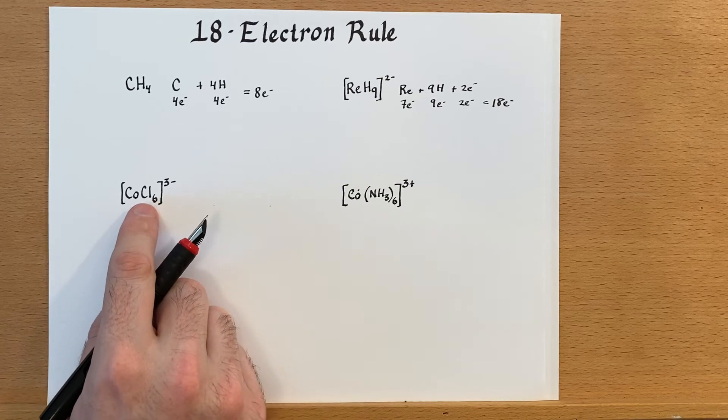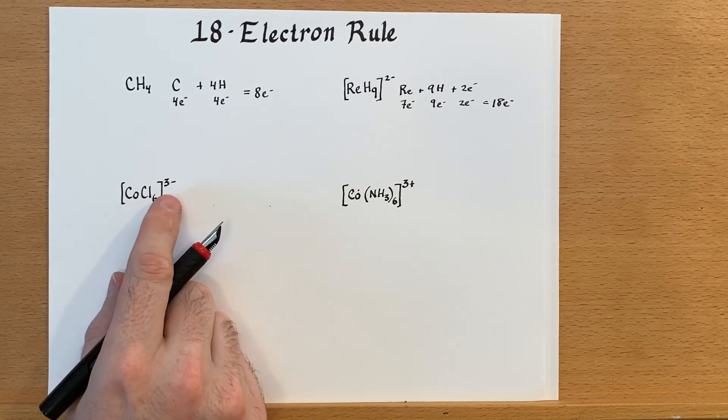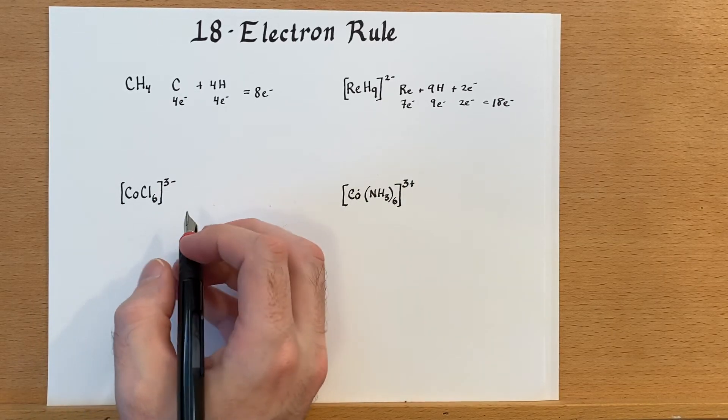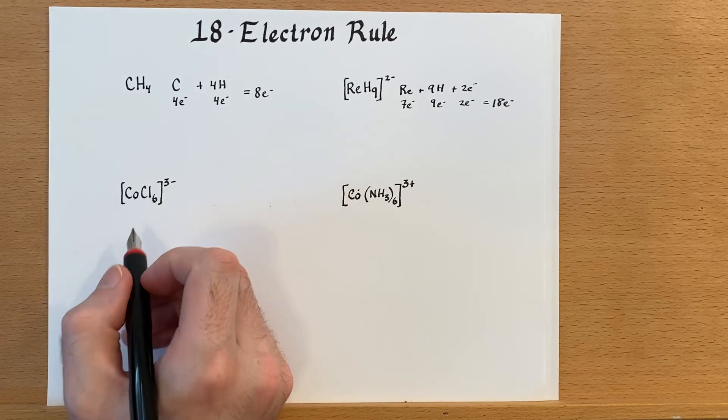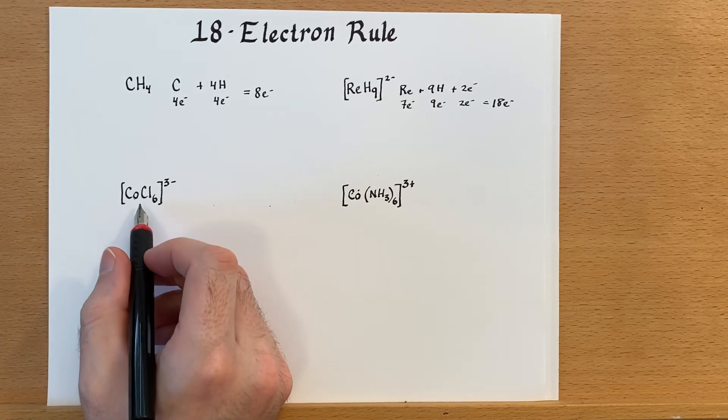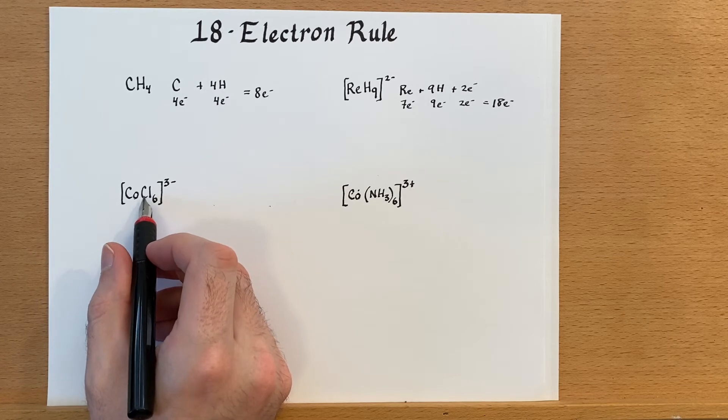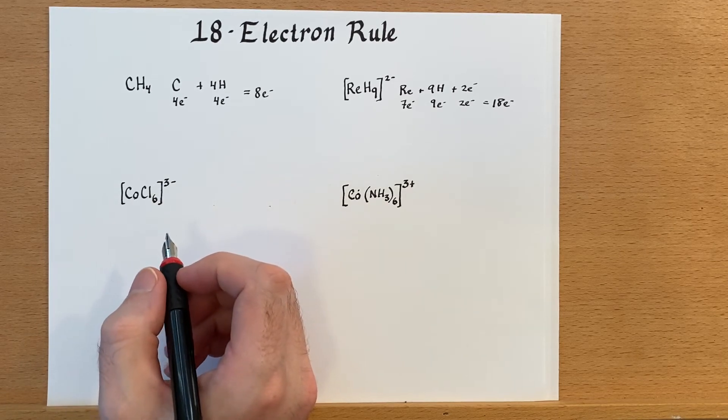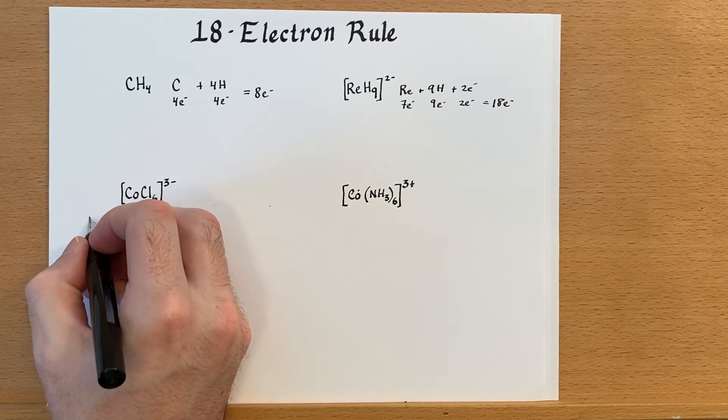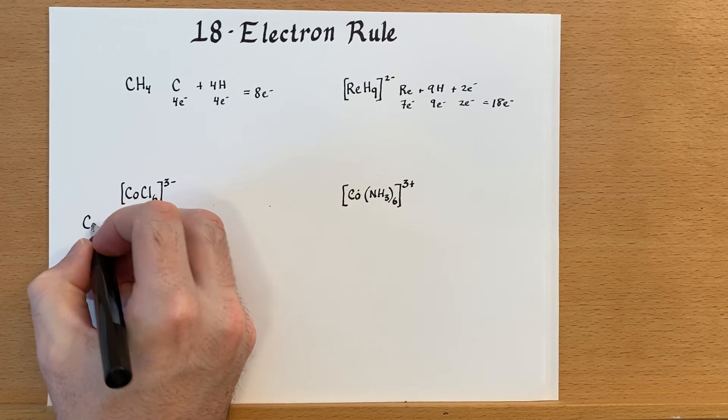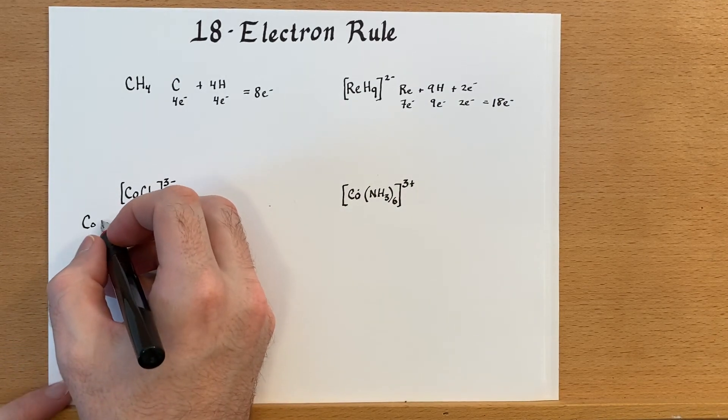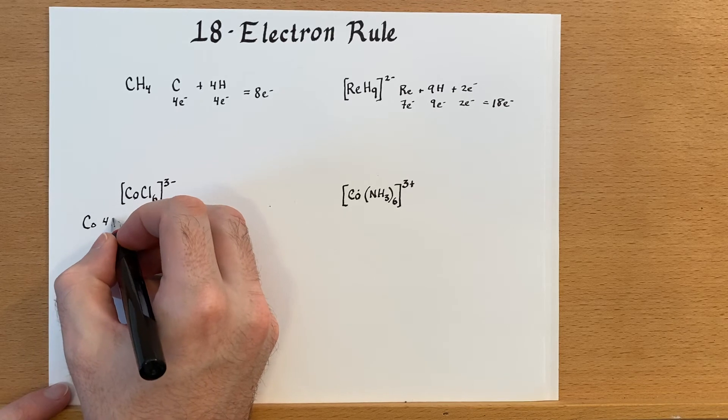Now let's look down here at this hexachlorocobaltate anion. If we look at this, we'll see that cobalt is a plus three charge, right? Because each chloride is a minus one, the entire complex is minus three, so the cobalt must be plus three.